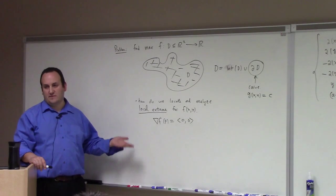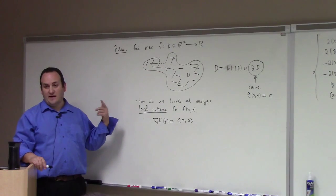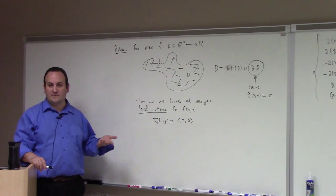You've got a finite list of things, pick a winner, pick a loser, you've got a minimum, you've got a maximum. Provided the set D is compact, you know that this process will terminate in an answer.